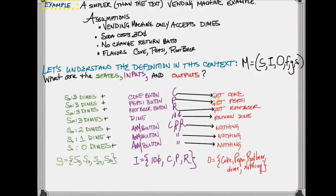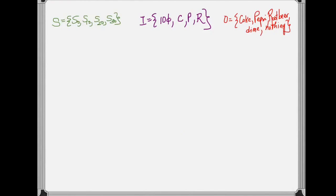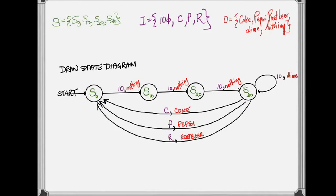Let's try and understand this now in the context of what we call a state diagram. So in the state diagram, we want to show the relationships between the states, the inputs, and the outputs.